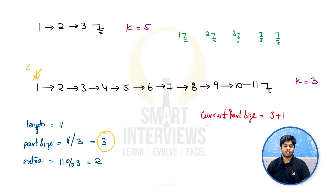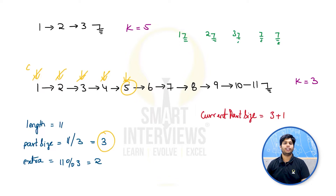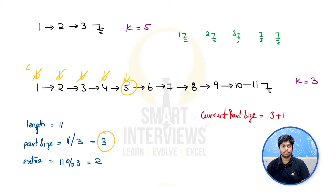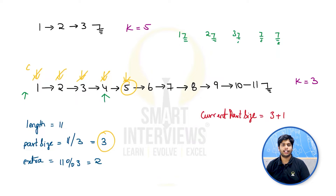With part size 4, we iterate: first iteration reaches node 2, second reaches 3, third reaches 4, and the fourth iteration reaches node 5. Node 5 will be the head of the next part. But we also need to sever the link, so we maintain a previous pointer. After 4 iterations, previous points to node 4, and we set previous.next to null.